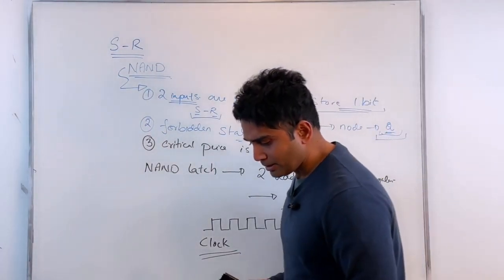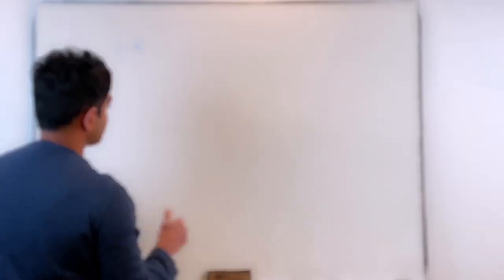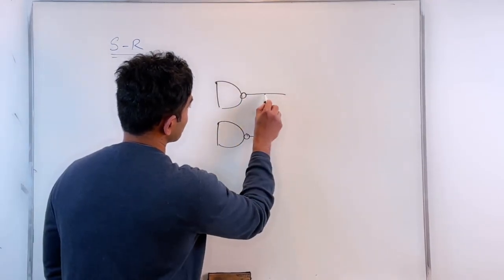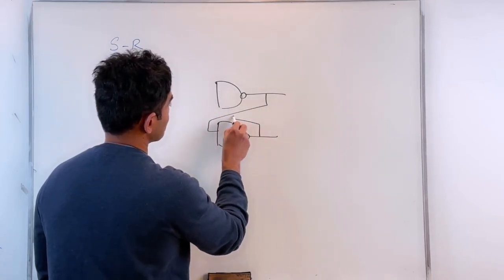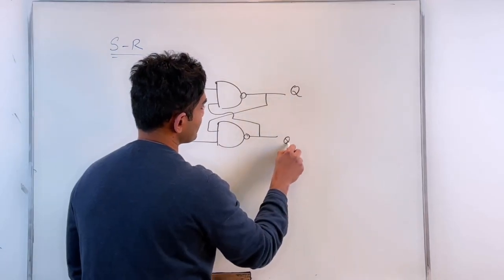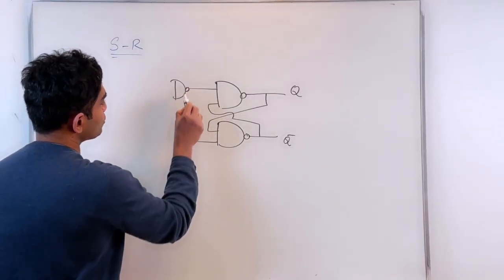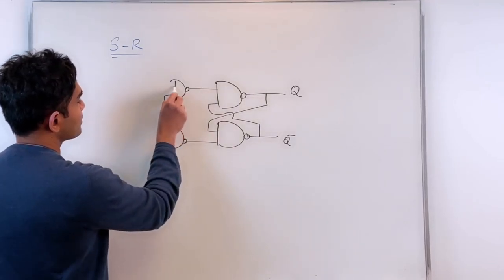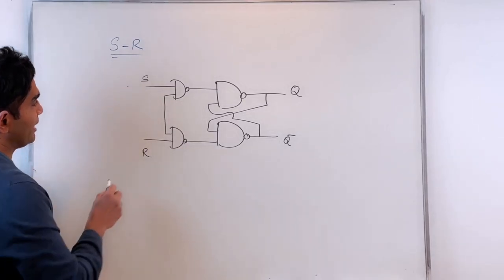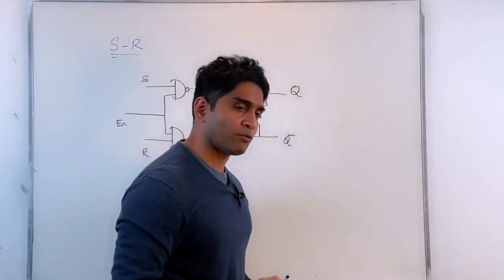Now let's start with the circuit we completed: the NAND latch consisting of two NAND gates with S and R inputs and Q and Q-prime outputs. We added two additional NAND gates to that, giving us a third input called the enable input.